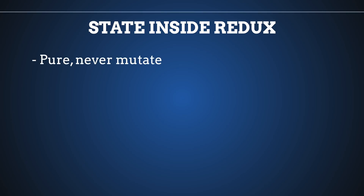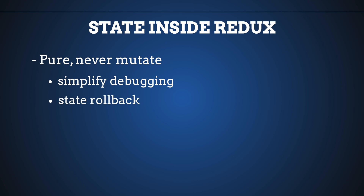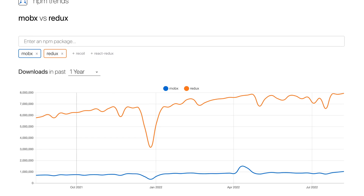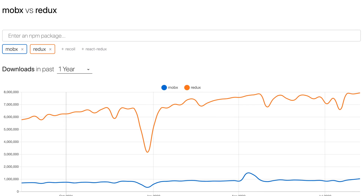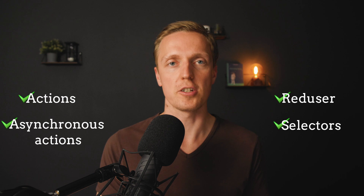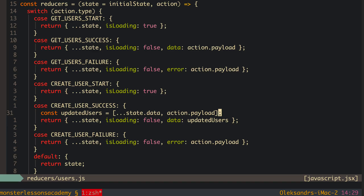In Redux, there is a single state that is completely pure — you never mutate it. This simplifies debugging because you can roll back state to any previous change, making Redux more scalable and more popular. The learning curve for Redux is much steeper: you have actions, async actions, reducers, selectors, and much more to master. The biggest complaint about Redux is its boilerplate — you write a lot of code, but it is fully configurable and scalable with nothing hidden under the hood.